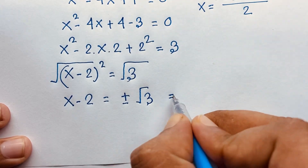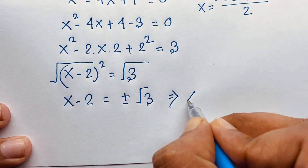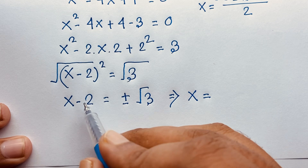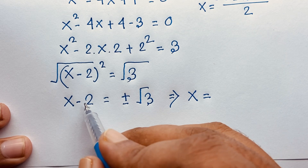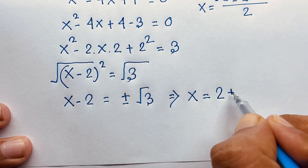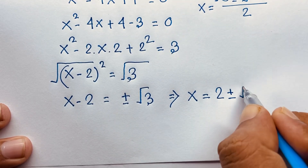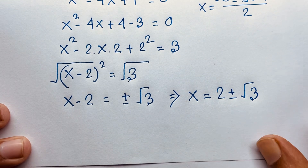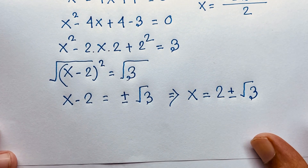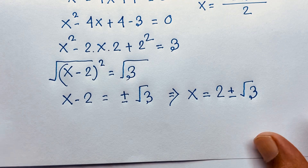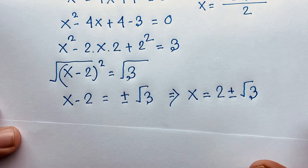Then x equals — moving the negative 2 to the other side, it becomes positive 2 — plus or minus square root 3. So our answer is x equals 2 plus or minus square root 3.